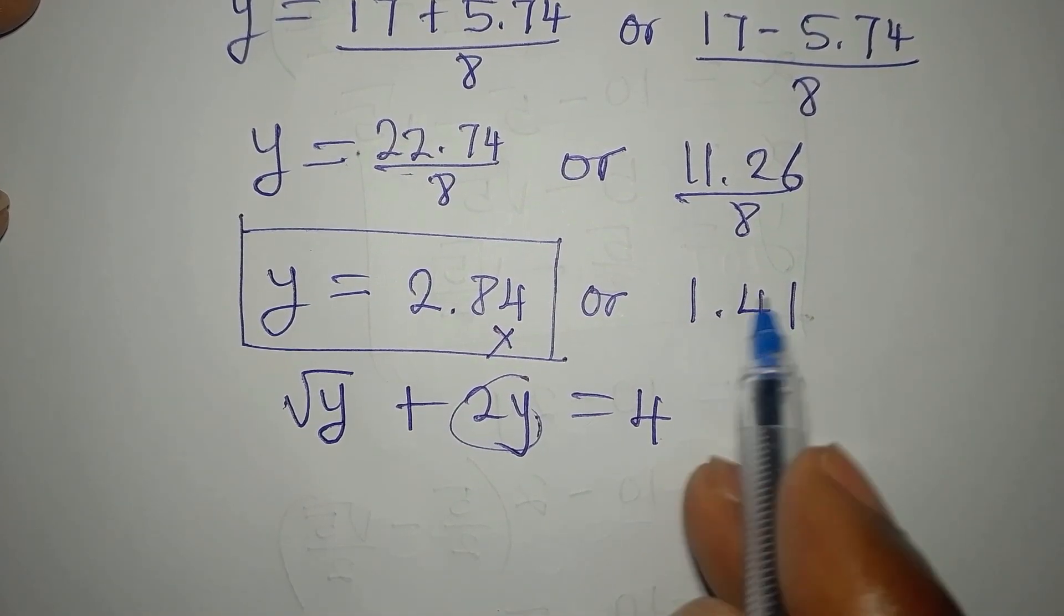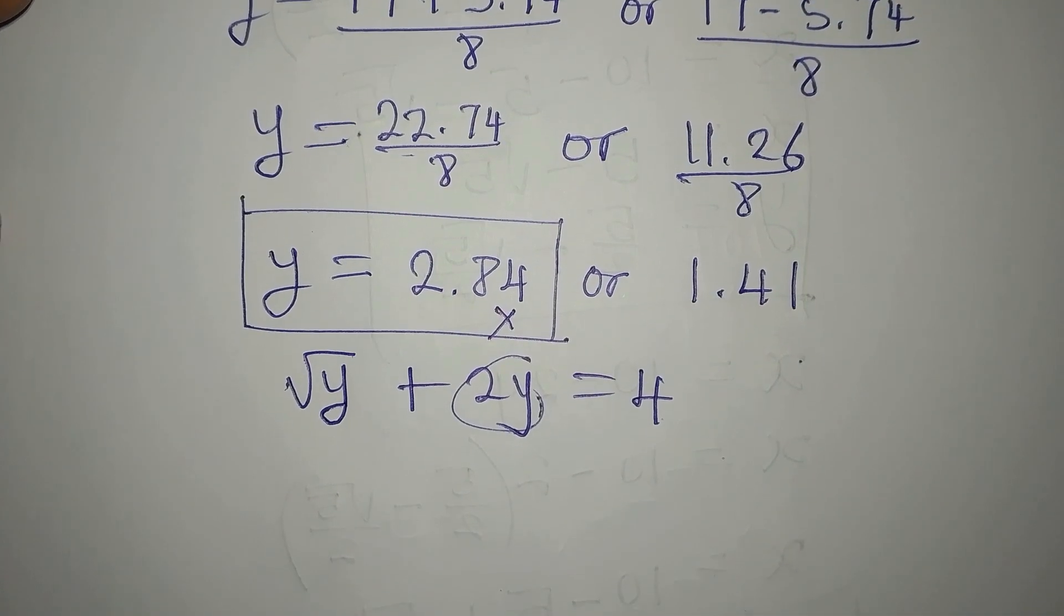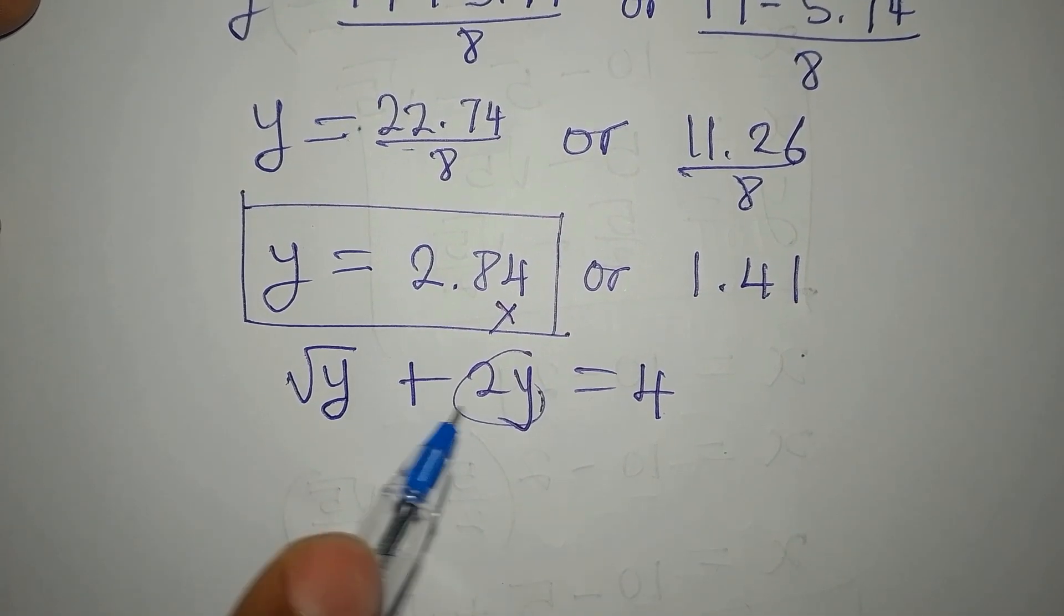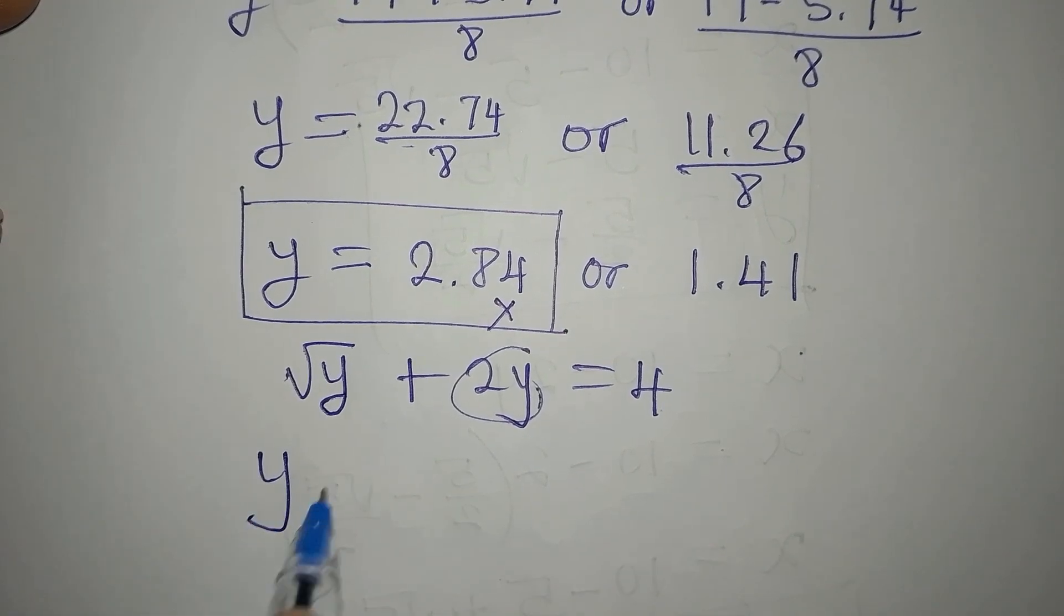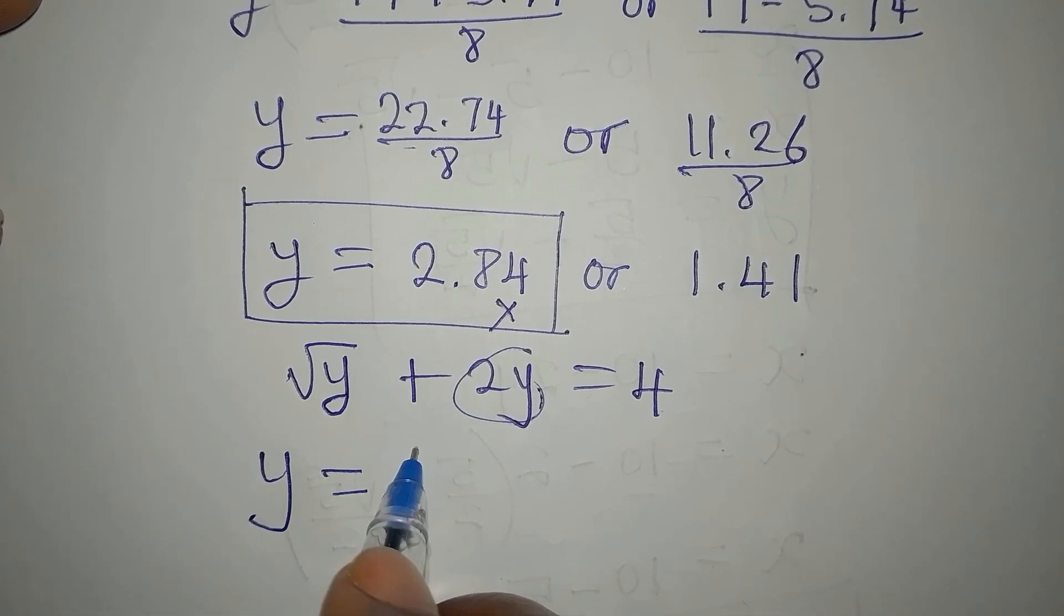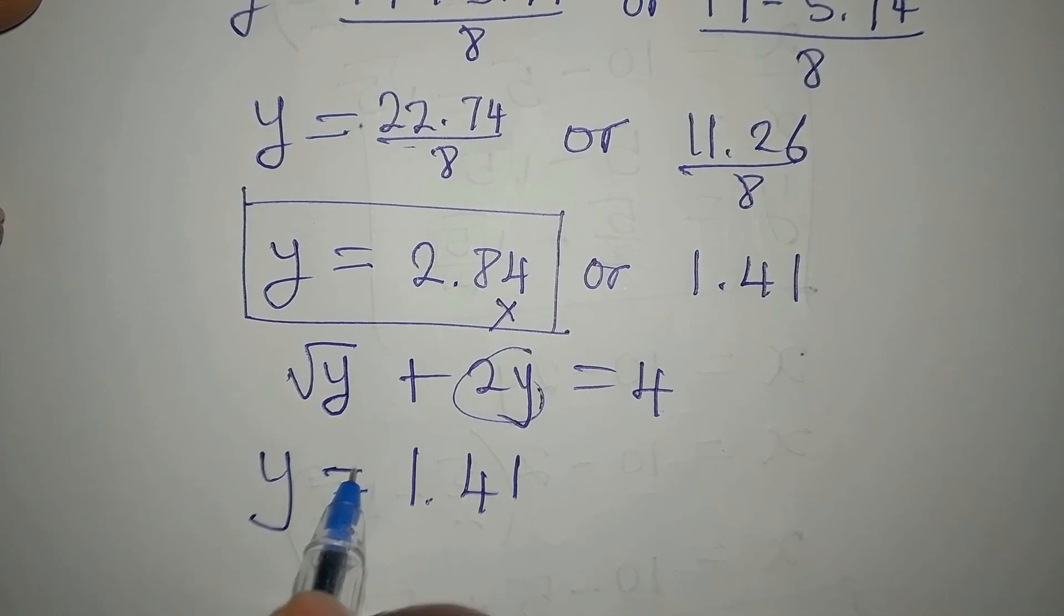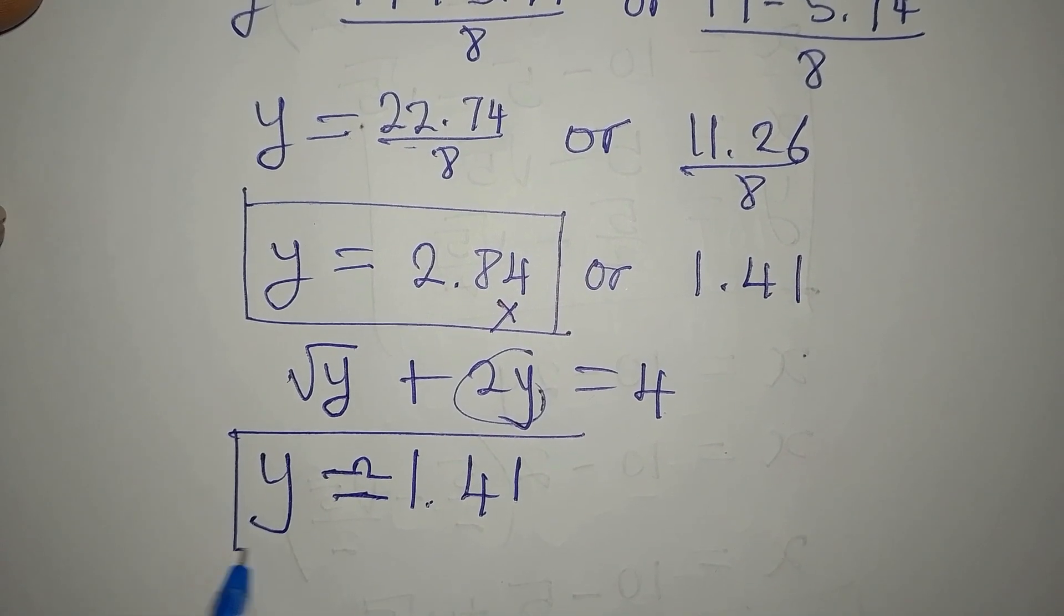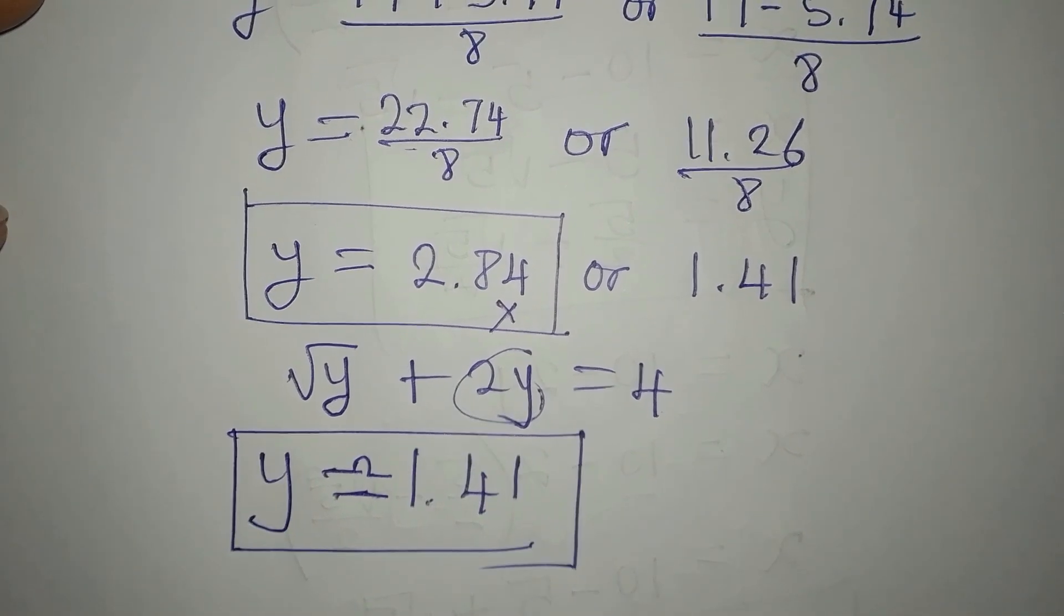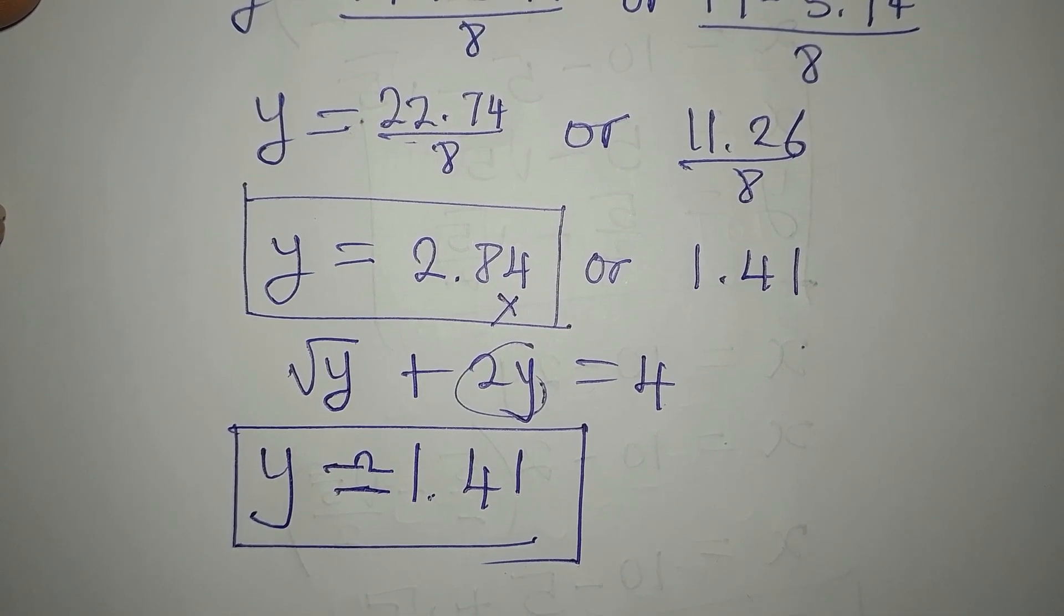But then if you pick this, it will definitely satisfy. It will be approximately equal to 4 on the other side. So our y now is approximately 1.41. This is the approximate value of y. Thank you for watching.